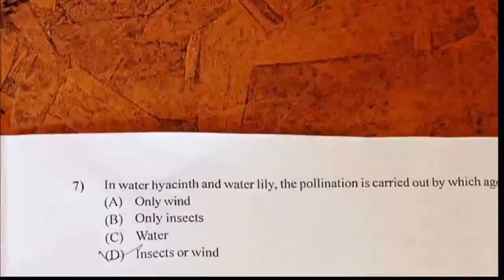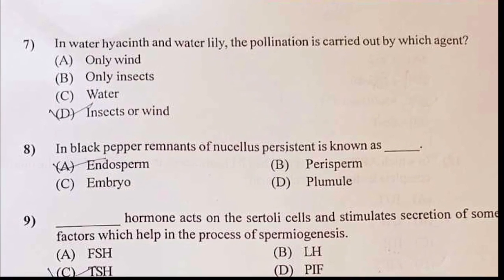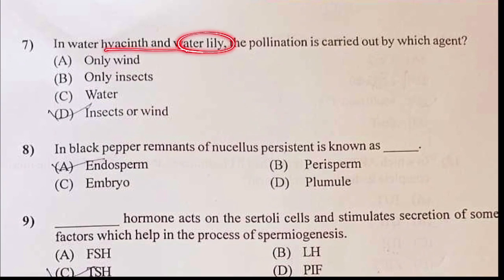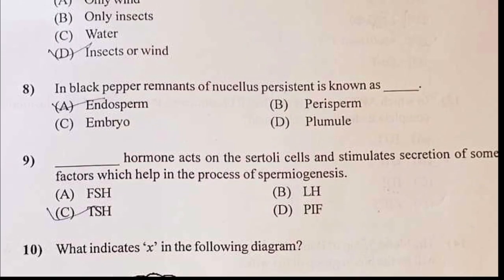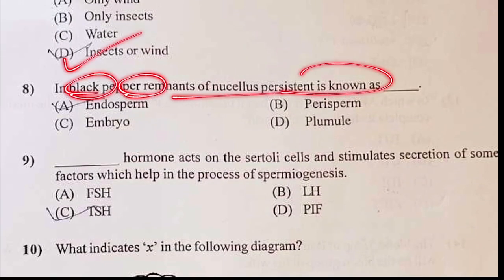Now let us move on to the next answer. Water lily — pollination is carried out by insects or wind both. In black pepper, it is called vegetative, known as perisperm.